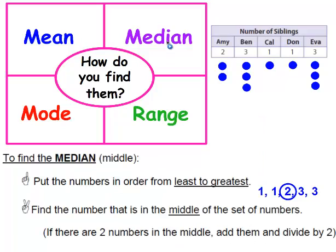Let's look at the median. To find the median, the first step is put the numbers in order from least to greatest. So I took 2, 3, 1, 1, 3 and put them in order — here they are from least to greatest. Then the second step is you find the number that's in the middle of the set of numbers. In this case there's only one middle number, so I circled it. But if there had been two, I would have added those two up, found the sum, and divided it by 2.